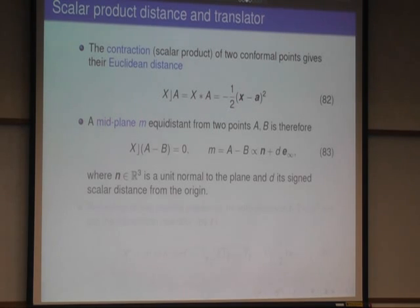Because if you take the Euclidean distances of x from two different points, a and b, and set that the two distances should be equal, so x inner product a minus x inner product b should be zero, then x must be on the mid-plane between the two points a and b. So a minus b describes the mid-plane between a and b.